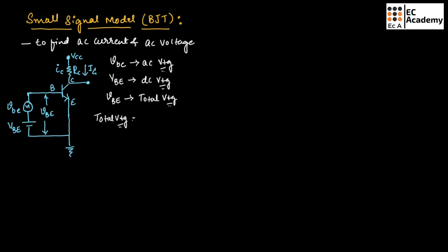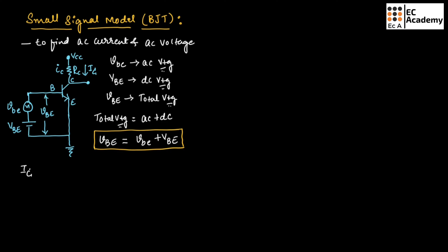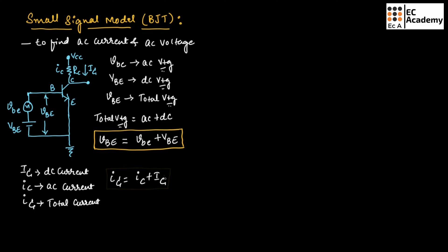Total voltage will be equal to AC signal plus DC signal: small VBE plus capital VBE. There are also three types of currents: capital IC is DC current, small IC is AC current, and small I capital C is the total current. Total current will be equal to AC current plus DC current, so small I capital C equals small IC plus capital IC. Let us call these equation 1 and equation 2.